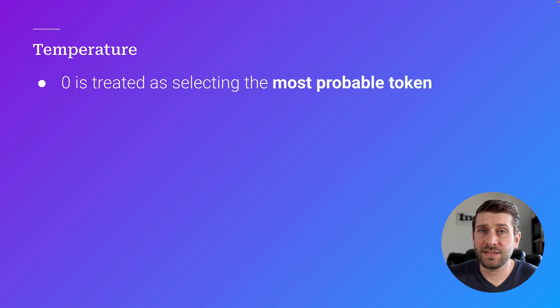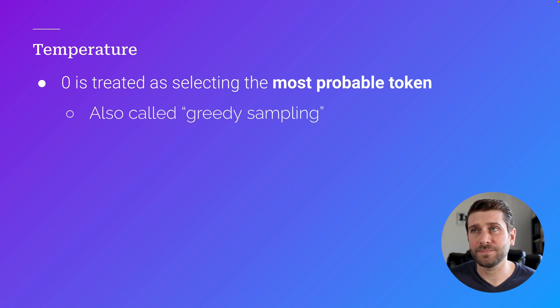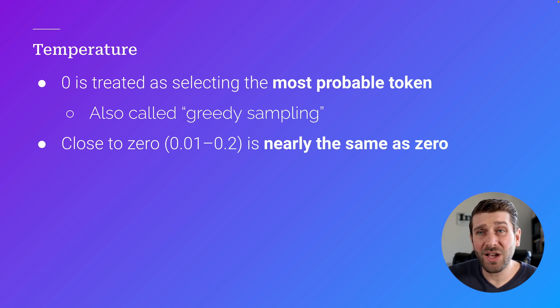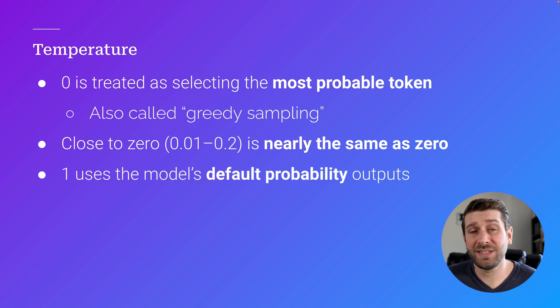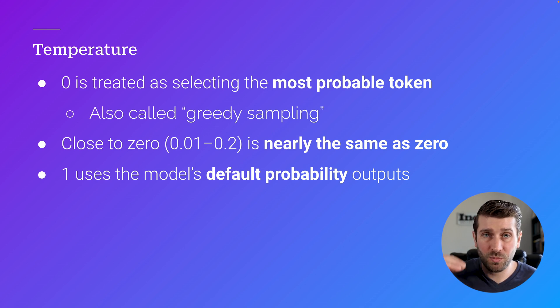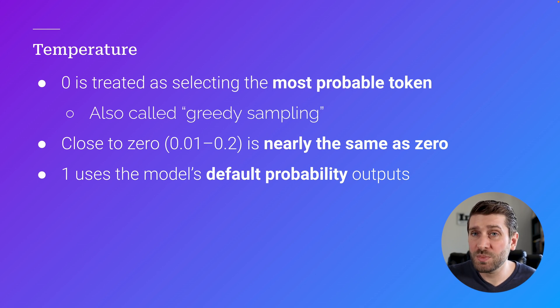Temperature is typically in a range of zero to two. Zero is treated as selecting the most probable token — another term for this is greedy sampling. Close to zero is almost the same thing as setting it to zero. And one uses the model's default probability outputs — if you just want it to select randomly from the probability distribution the model generated, you can leave it at one. This is still pretty random and gives a lot of directions the model can go in.